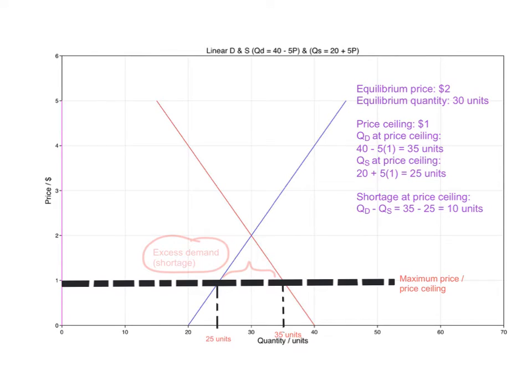Now in the diagram, if you were to label the shortage or the excess demand, it is this difference here between the quantity demanded at the maximum price and the quantity supplied at this price ceiling. This gives you the excess demand or the shortage at this price ceiling.